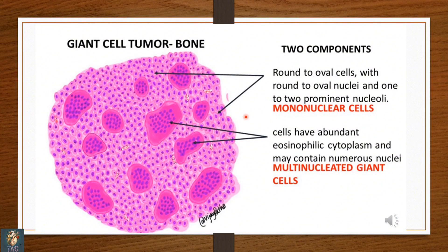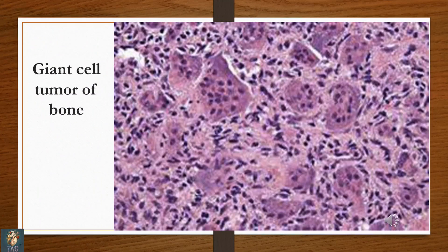Now moving towards the musculoskeletal system. This slide shows an illustrative sketch of giant cell tumor of the bone, also known as osteoclastoma. There are two cellular populations: first, multinucleated giant cells with abundant eosinophilic cytoplasm and multiple nuclei; second, round to oval cells with round to oval nuclei and prominent nucleoli. In between the tumor giant cells, we have this second population of mononuclear cells. The diagnosis is giant cell tumor of the bone, or osteoclastoma.